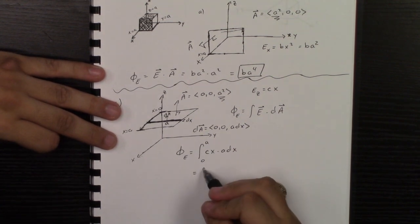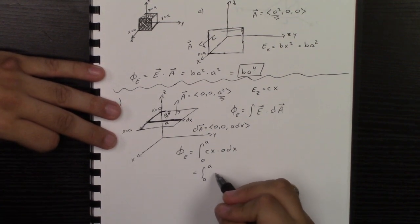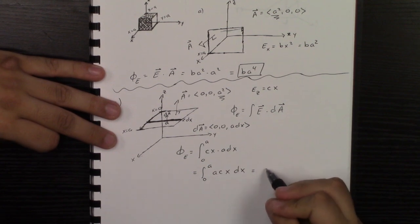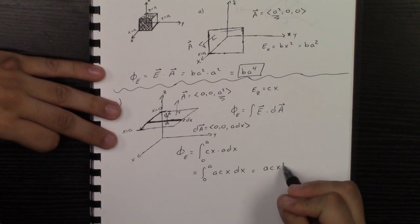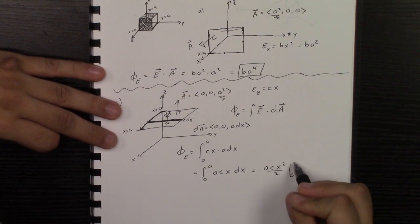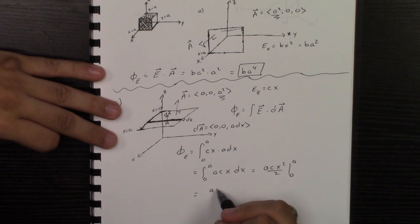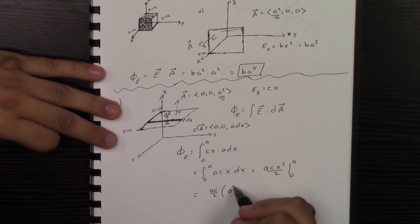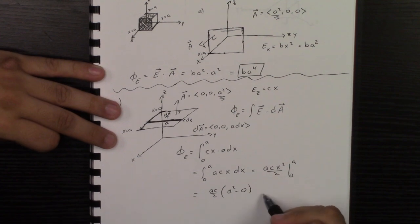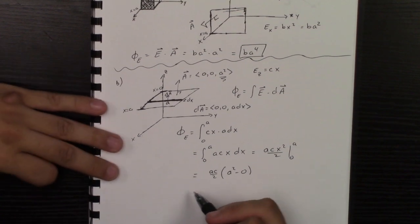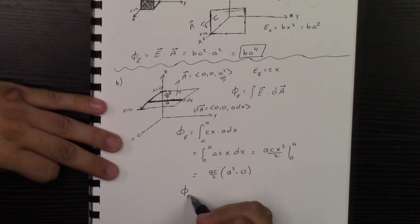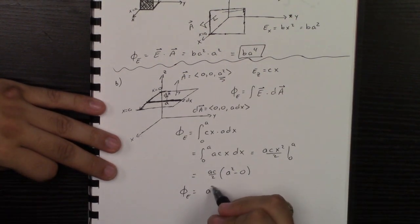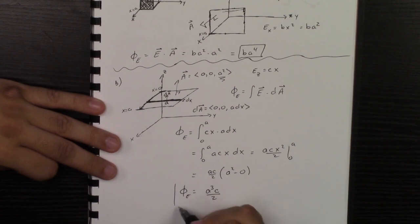The electric flux is the integral from 0 to A of the Z component of E times the Z component of DA, which is the integral from 0 to A of AC·X·dX. Pulling constants to the front: AC times the integral of X·dX from 0 to A, which gives AC times X squared over 2 evaluated from 0 to A. Plugging in: AC times A squared over 2 minus 0, giving a final answer of CA cubed over 2.